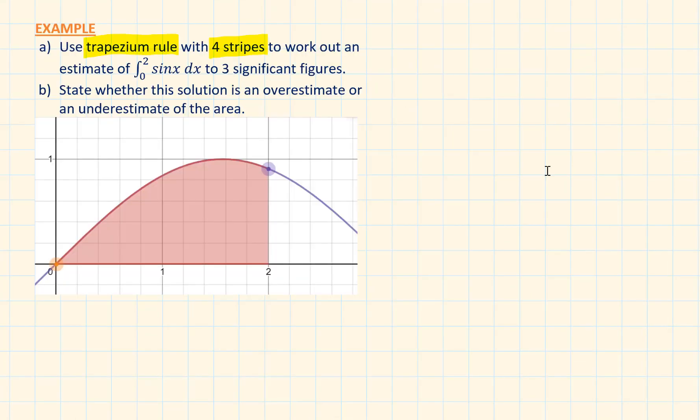Now let's look at an actual example. Use the Trapezium rule with four stripes to work out an estimate of the sin x with respect to x to three significant figures. State whether this solution is an overestimate or an underestimate of the area.